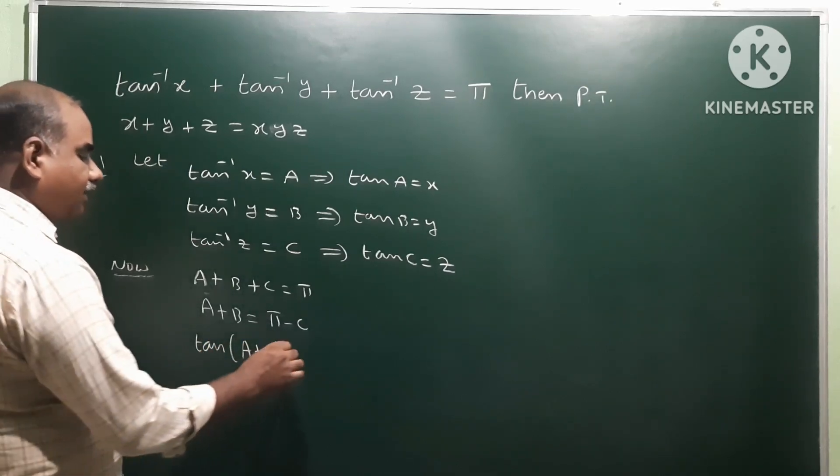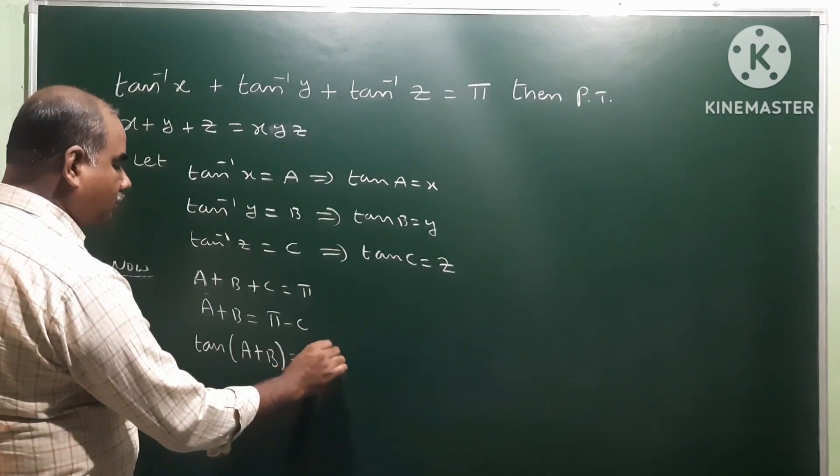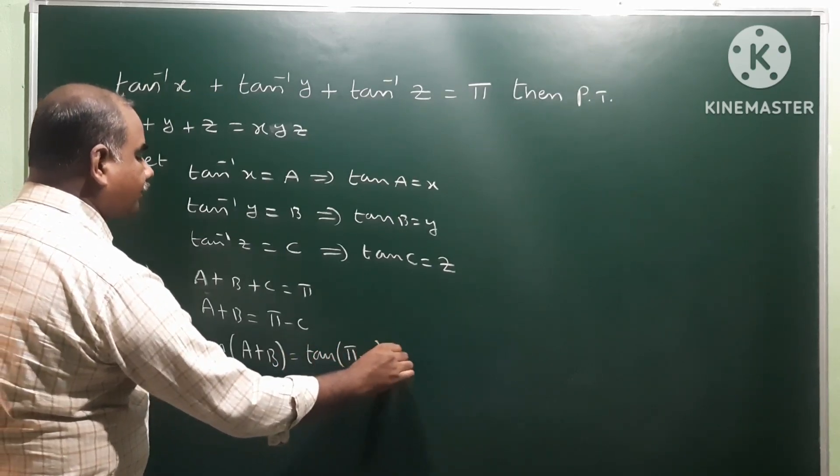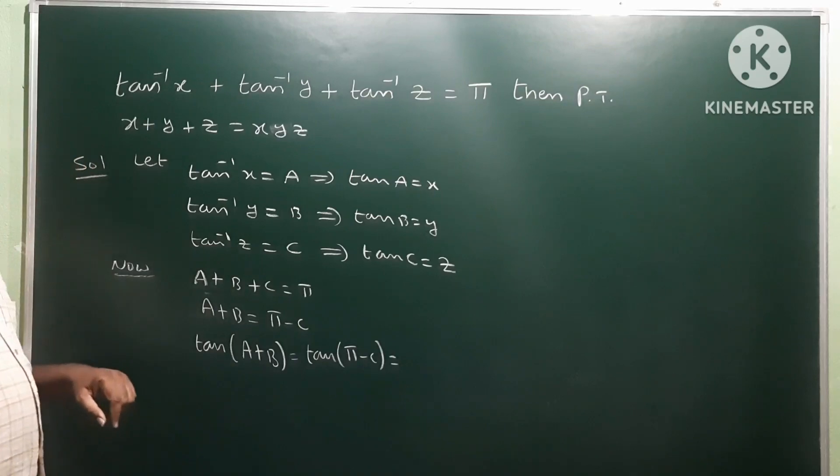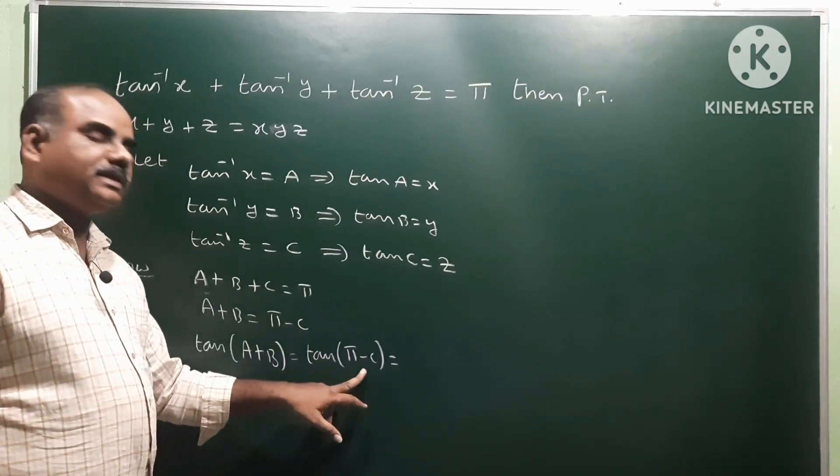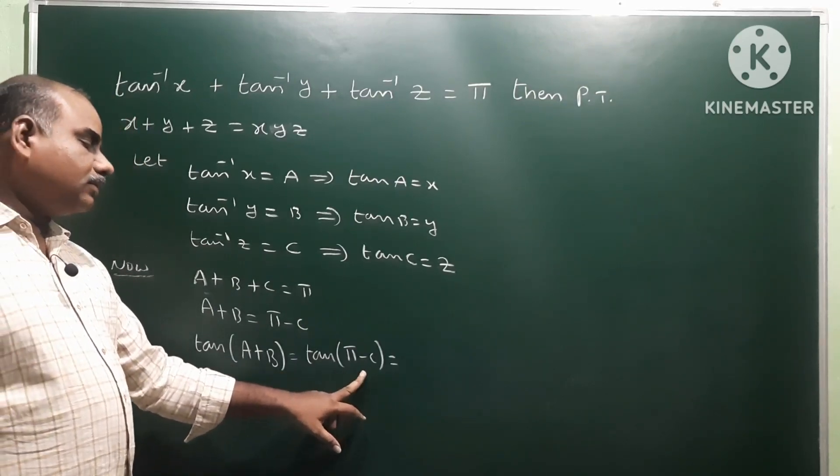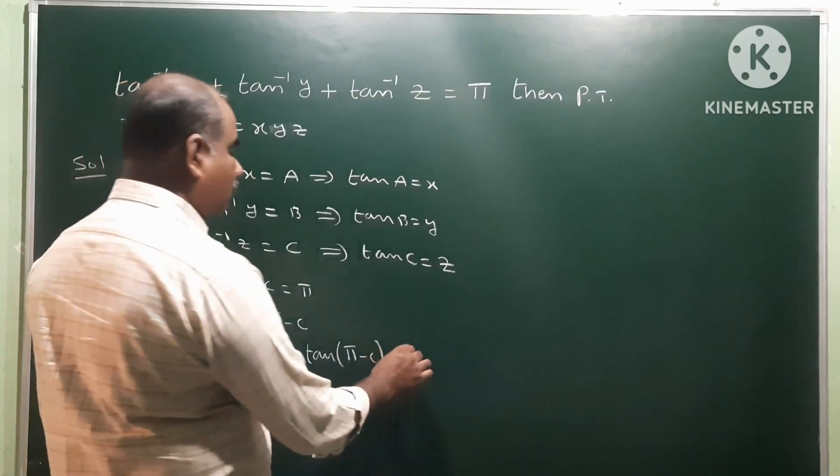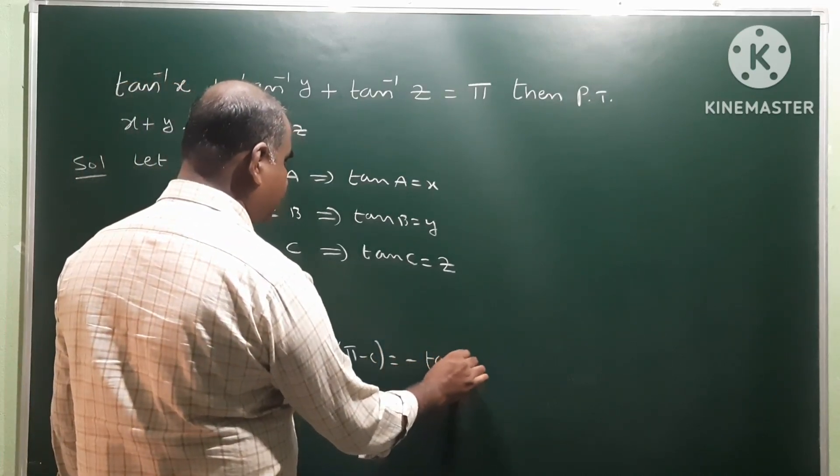Then we have tan of A plus B is equal to tan of 180 minus C. 180 means tan becomes tan only. 180 minus C means second quadrant. So in the second quadrant tan is negative. Therefore it becomes minus tan C.